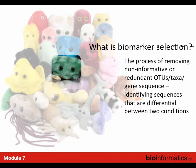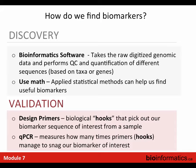Biomarker selection is basically the process of removing non-informative sequences. Doing metagenomics analysis directly to investigate something is still very valuable, but being able to remove non-informative or redundant features and identify those that are truly differential between two conditions is of high interest. The workflow involves software that takes raw digitized data, performs QC, quantifies different sequences by taxa or genes, and then uses statistical methods to find these markers, followed by a key validation step.